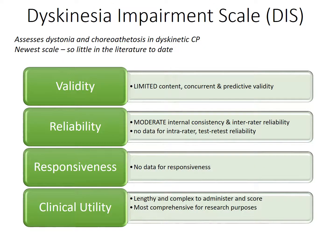The Dyskinesia Impairment Scale was developed by a team in Belgium in 2012. It measures both dystonia and choreoathetosis in dyskinetic CP, assessing the duration and amplitude of dystonia or choreoathetosis on action and at rest. Being a relatively new tool, it still lacks some evidence of reliability and validity, and there was no data regarding its responsiveness to change.